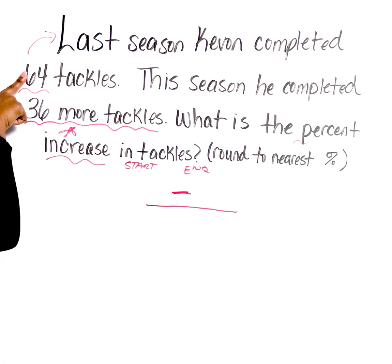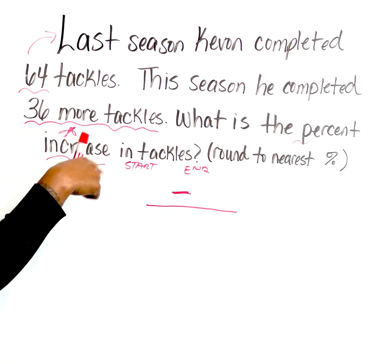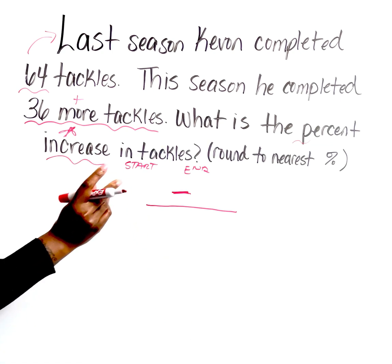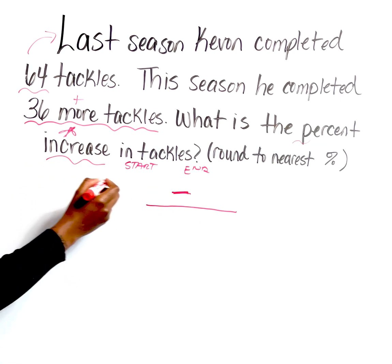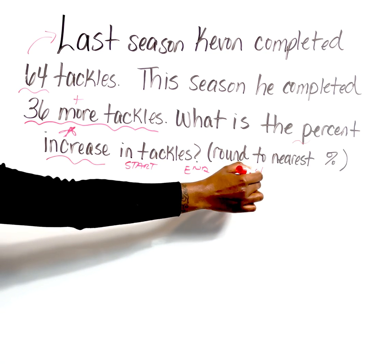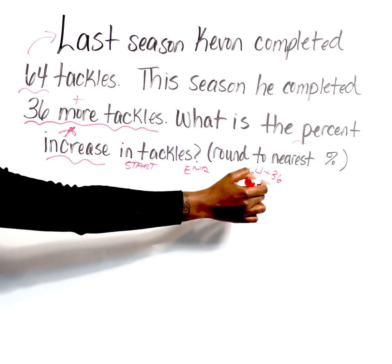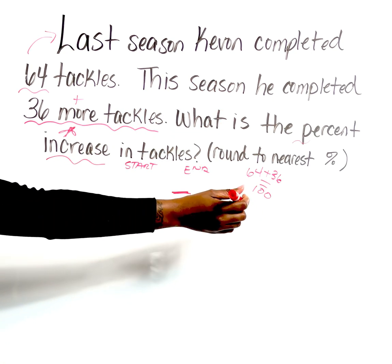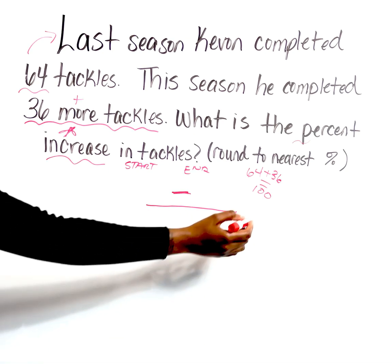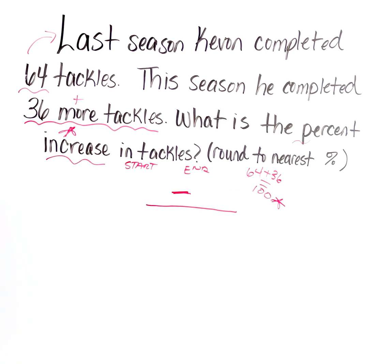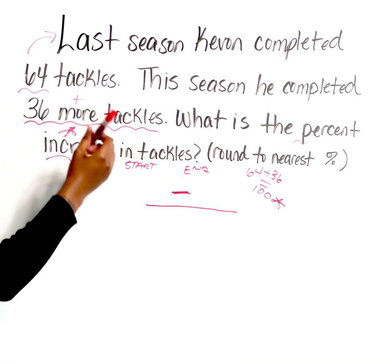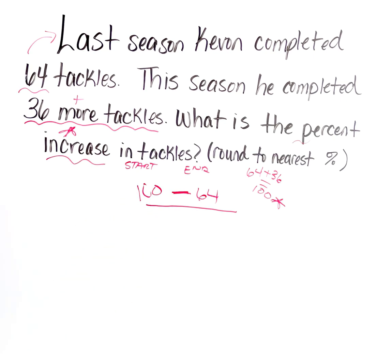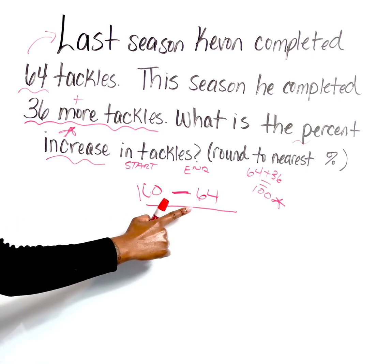We know last year was 64. This year was 36 more. Make sure you know your keywords for all your operations. So 64 plus 36 gives us 100 — that means this season he completed 100 tackles. So we have 100 and 64. Put the largest value first, and then we always divide by the original value.